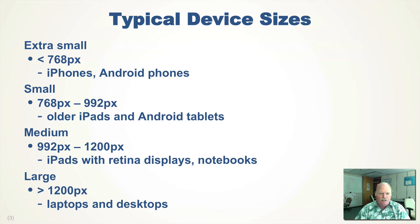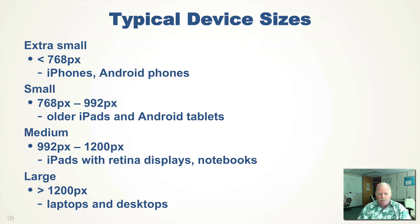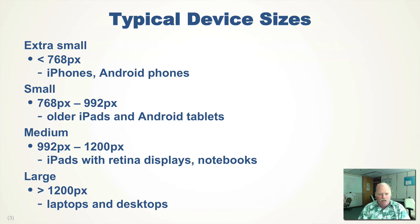Let's talk about some of the typical device sizes. Generally, a width less than 768 pixels is extra small devices like your phone. Some older phones are even smaller, but generally you could say it's about 768 pixels. Small, the tablet size, goes from 768 to 992 — these are rough boundaries. Medium is between 992 and 1200 pixels, that's sort of the iPads and notebooks. And large is the larger 17-inch laptops or desktops with more than 1200 pixels horizontally.